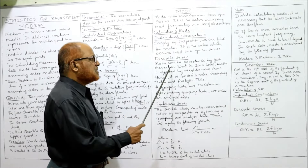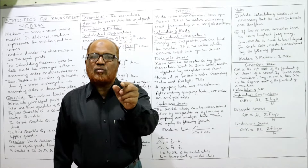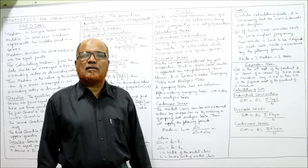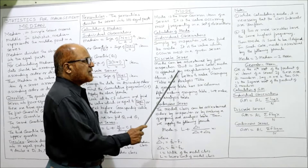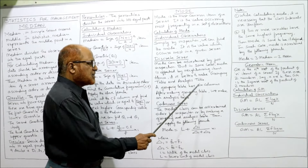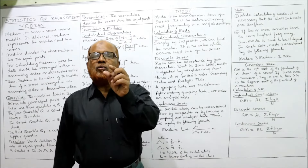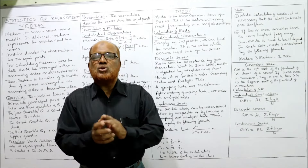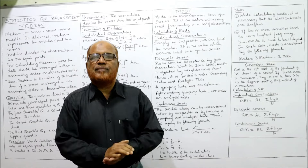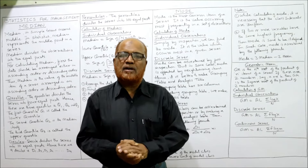For discrete series, mode can be found by inspection: find the highest frequency and the corresponding value of X is the mode. However, in some cases mode is affected by neighboring items, so it is better to make a grouping table and an analysis table. A grouping table has six columns. After making the grouping table we make an analysis table, which gives us the correct mode value.